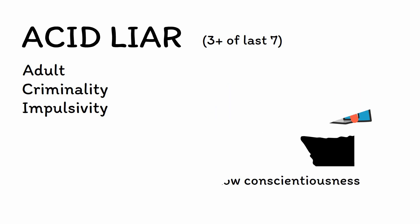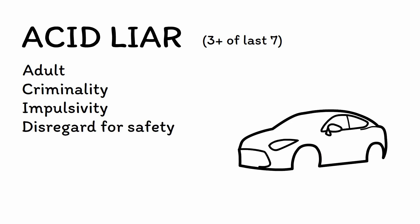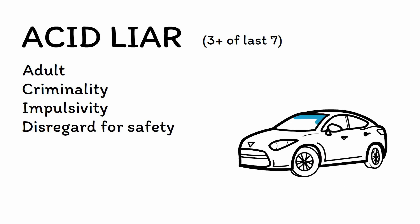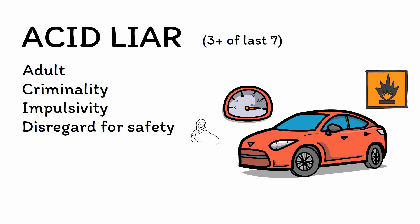D is for disregard for safety. People with ASPD routinely ignore, disregard, or show outright disdain for the safety of not only themselves but others as well, such as recklessly speeding through a residential street where children are playing.